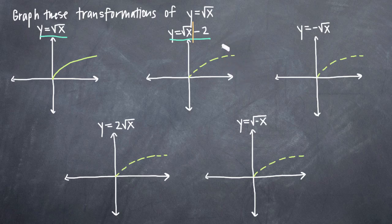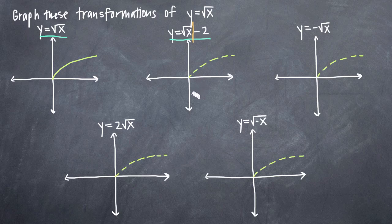So what we mean by that is that we have the function y equals square root of x minus 2. Every point that would be on our original graph y equals the square root of x is just going to get moved down 2 units. We're going to take every point and shift it down by negative 2, so that our transformation actually looks like that.